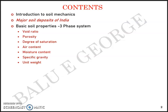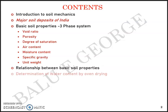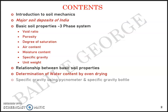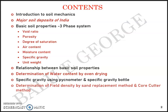The basic soil properties include void ratio, porosity, degree of saturation, air content, moisture content, specific gravity, and unit weight. Then you have the relationships between the basic soil properties, the determination of water content by oven drying method, specific gravity determination using pycnometer and specific gravity bottle method, determination of field density by sand replacement method and core cutter method, and two terms — sensitivity and thixotropy. Based on all these contents, you have a few numerical problems as well.